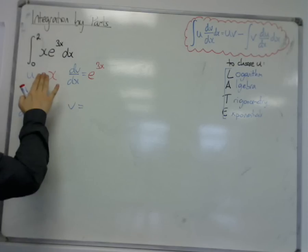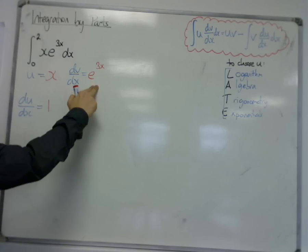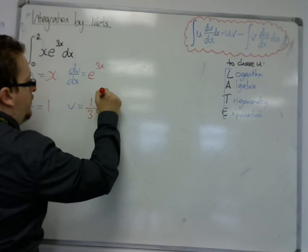Now, if I differentiate x with respect to x, I get 1. And if I integrate e to the 3x with respect to x, I get 1 third e to the 3x.